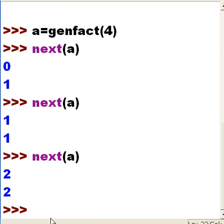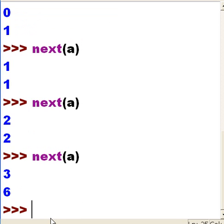And the last one: next(a). That should be 3, so the first number should be 3, the next number should be 3 times 2 times 1, which is 6. And bingo, that's exactly what we've got.